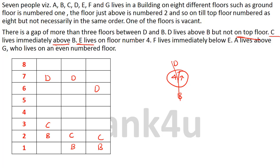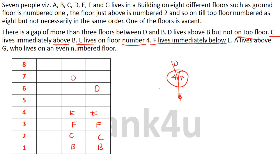The next clue is: E lives on floor number 4. That's direct information — E will be living on floor number 4. The next clue is: F lives immediately below E. In the first case, F cannot live immediately below E because C is already placed immediately below E. So this possibility gets eliminated. In the remaining case, F has to be placed immediately below E.